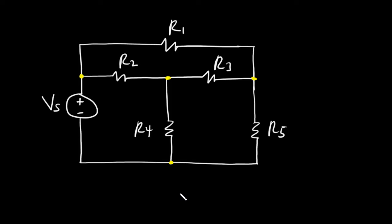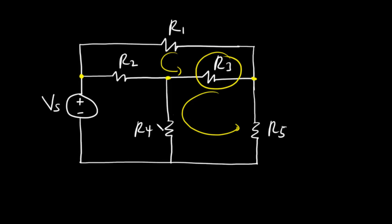Interestingly, no two resistors can be in parallel either. This is because it is not possible to go through a loop without passing through only two resistors. For example, you may have to go through three resistors if you select this loop — the same applies to this particular loop, where you may have to go through R3, R4, and R5. Since it is not possible to go through a loop passing through only two resistors, the resistors cannot be in parallel. In situations where resistors cannot be identified as in series or in parallel, it will be necessary to introduce a new technique for combining them. This is referred to as the delta star or star delta transformation.